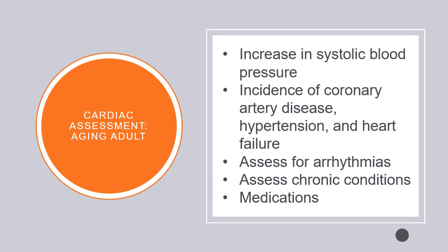In the aging adult, systolic blood pressure often increases, and coronary heart disease, hypertension, and heart failure become more common, so looking for subtle signs and symptoms is important. Arrhythmias also become more common — PVCs are a normal finding, and look for irregularly irregular heart rhythms such as atrial fibrillation. Assess chronic conditions as well as acute exacerbations, and review medications, thinking critically about potential side effects and their impact on the patient's presentation and current condition.